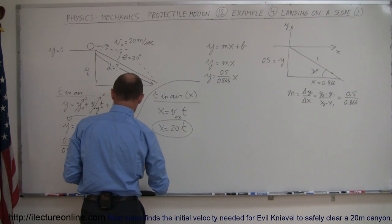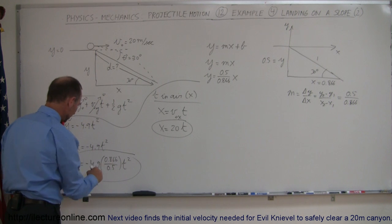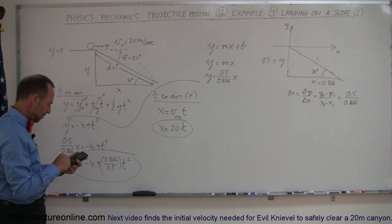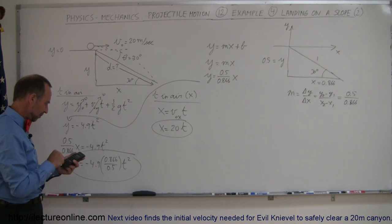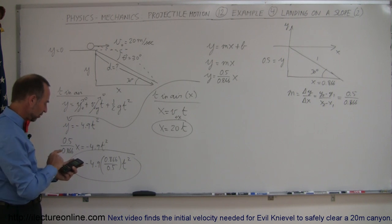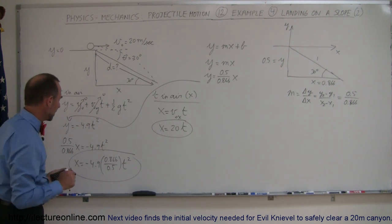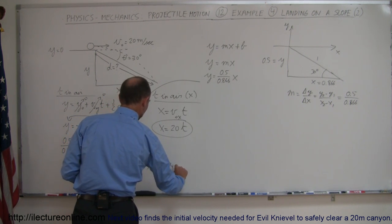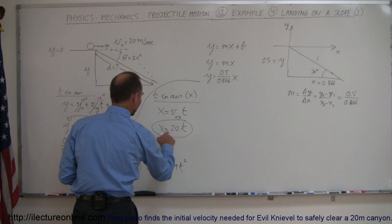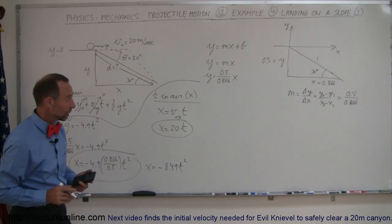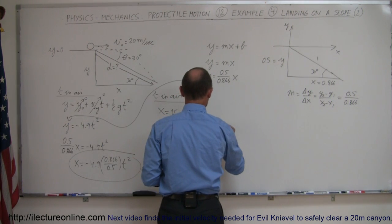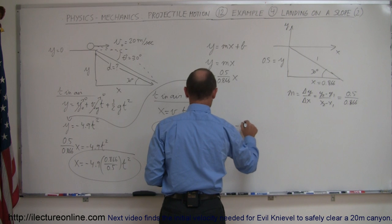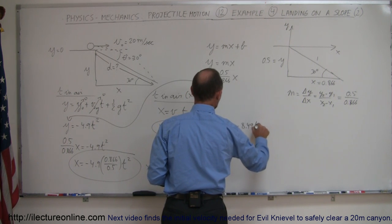So now we can say that, and I'm going to simplify this a little bit, so that's divided by 0.5 times 4.9 equals, so this becomes 8.49. So we have x is equal to minus 8.49t squared, and I have x is equal to 20t, set those equal to each other, so we have 20t is equal to minus 8.49t squared.